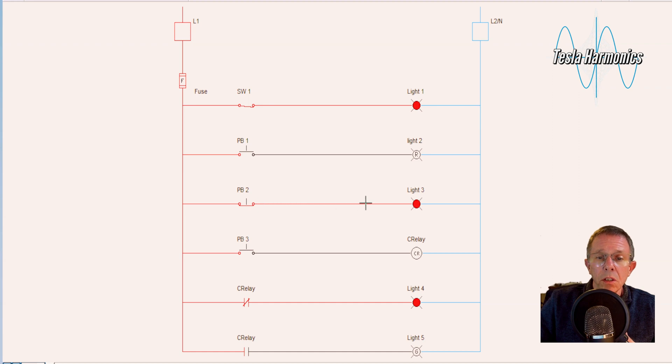It's receiving its hot, it has its neutral, that light is on. If we push this normally closed push button, the light temporarily goes off as long as we're pushing the button. When we let go of the button it comes back on because it goes back to its normal state.